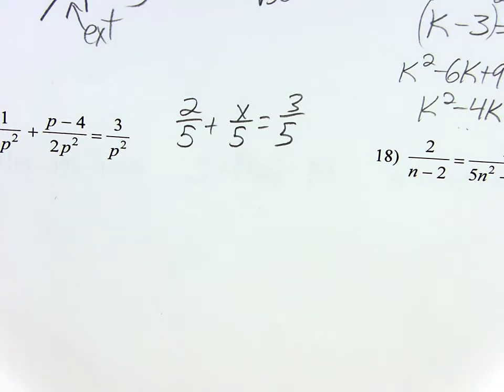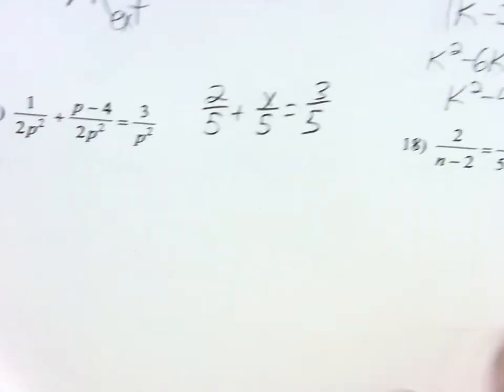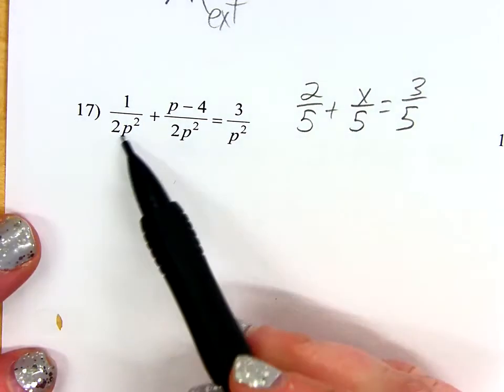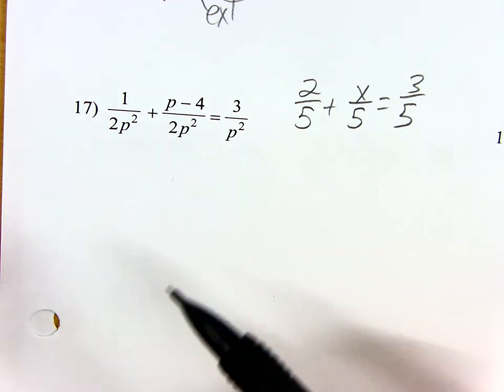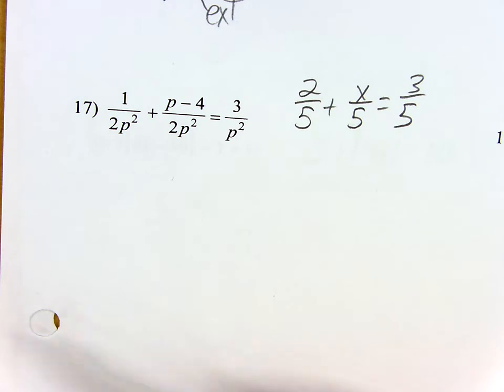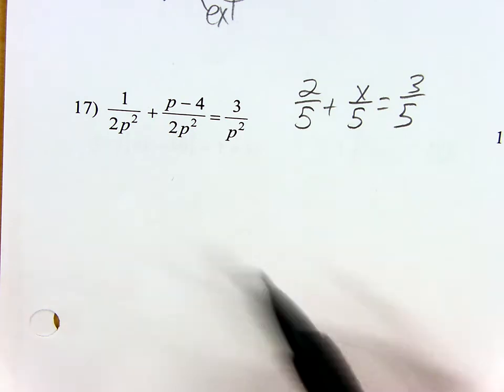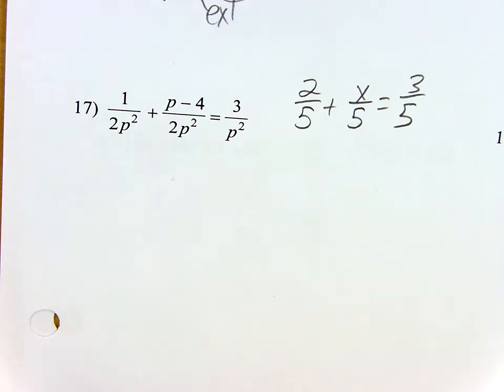Otherwise, again, there's an extraneous solution. Sometimes they're referred to as excluded values. So if I'm looking at number 17, for example, the only number that P could be to get a 0 in the denominator would be 0. So 0 would be an excluded value. If that ends up being my answer, I'd have to throw it out.